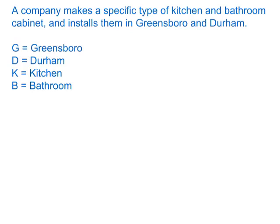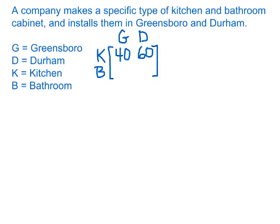A company makes kitchen and bathroom cabinets and installs them in Greensboro and Durham. Let's make up some data showing the amount of business they do in a two-by-two matrix, using K and B for kitchen and bathroom as row labels, and G and D for Greensboro and Durham as column labels. They do 40 kitchen installations in Greensboro and 60 in Durham, and 15 bathroom installations in Greensboro and 30 in Durham.